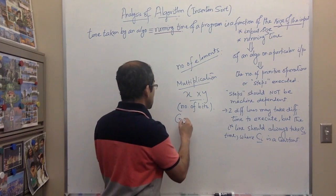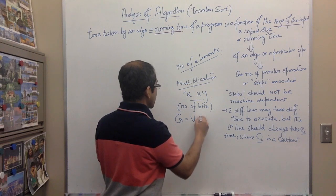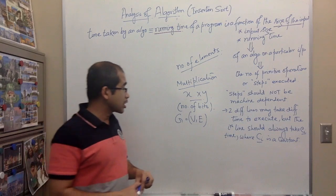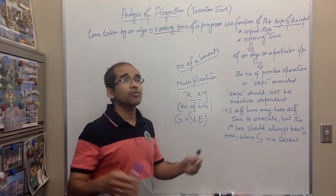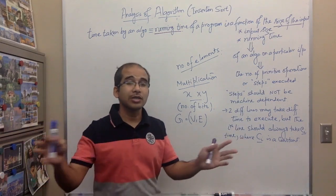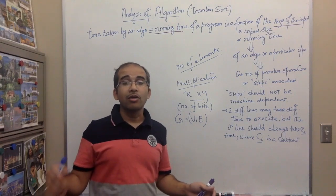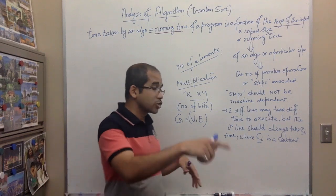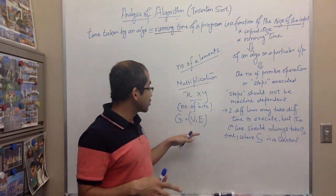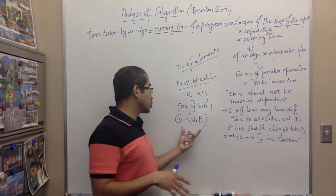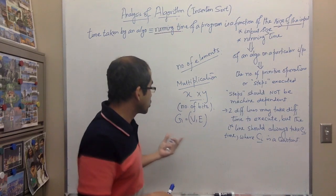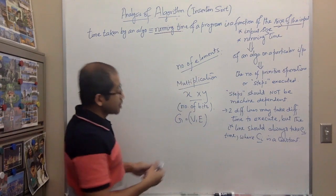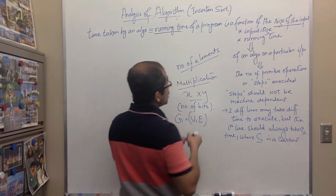Consider a graph problem where we represent a graph G as a set of vertices V and a set of edges E. For example, a university campus map where every building is a vertex and the paths connecting them are edges. For such a problem, we need two sets of input elements to characterize the input size.